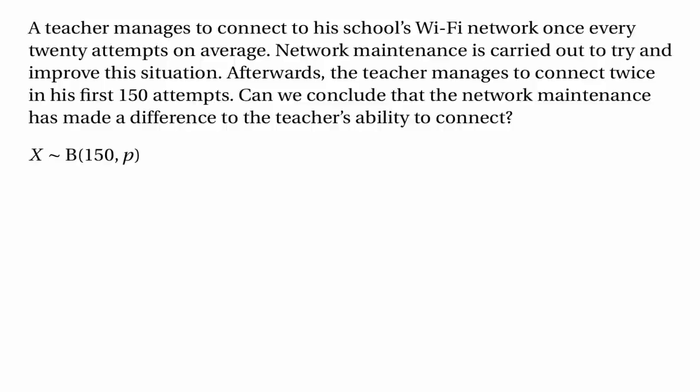The test statistic here will have a binomial distribution, because we're dealing with a number of successes in a sequence of trials — the trials are the attempts to connect, and success is getting online. The null hypothesis says p equals 0.05, since the teacher connects once every 20 attempts. The alternative hypothesis is that p is not equal to 0.05 — not less than or greater than — because we're asked whether the maintenance has made a difference, not whether it improved or worsened the situation.